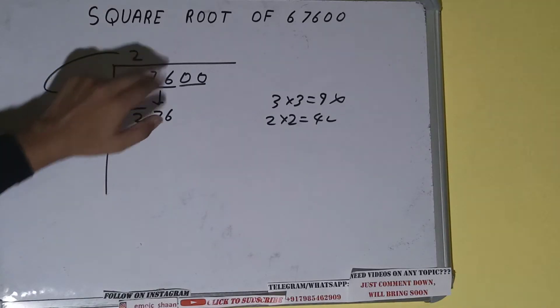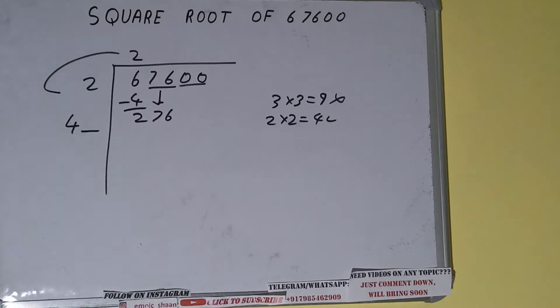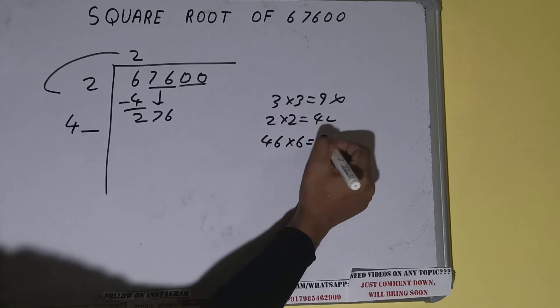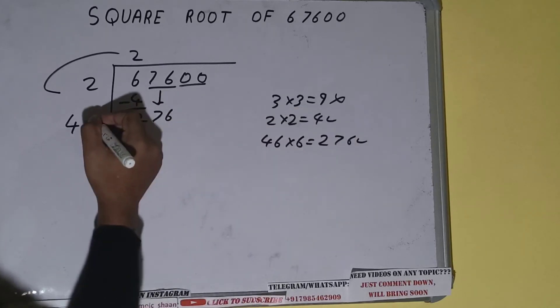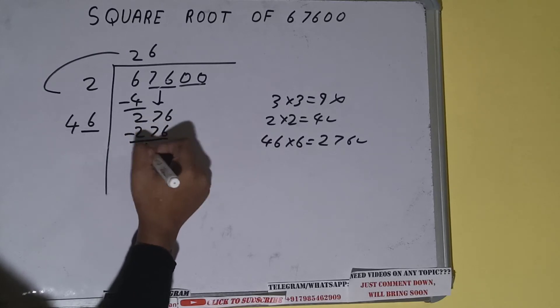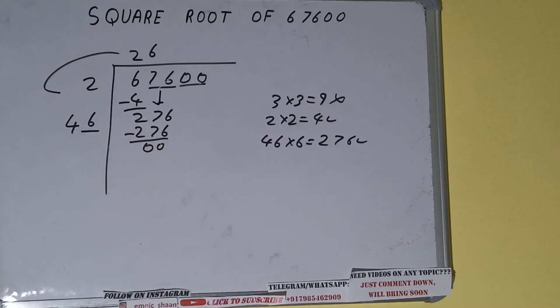Now whatever number we write here we have to write here also. So we can try six times, that is 46 into 6. We can try it, it will be 276, which is good to take. So six here and six here: 276. Subtract and we'll be getting zero.